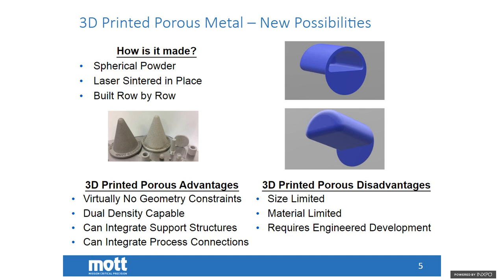One thing new in our industry in the last couple of years is the ability to introduce 3D printed products. Here at Mott, we have a laser sintering 3D printing machine. That gives a whole new range of possibilities to porous metal filtration and flow control devices. Prior to 3D printing, we were restricted by common manufacturing methods producing things such as sheet, tubes, discs, or cups. With the introduction of a 3D printer, we can now produce complex geometries — you can see a couple of them on the screen.